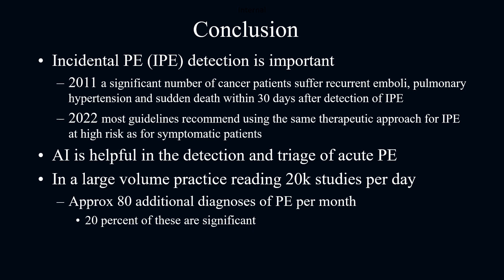Detection of incidental pulmonary emboli is not a trivial event. Multiple studies have shown a significant number of patients have recurring emboli, pulmonary hypertension, and sudden death events after detection of incidental PE. In high-risk patients, such as those who have cancer or COVID, there is no difference in treatment between symptomatic or asymptomatic patients, especially above the subsegmental level.